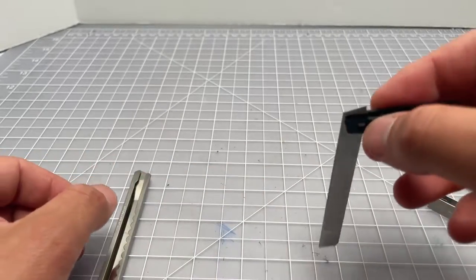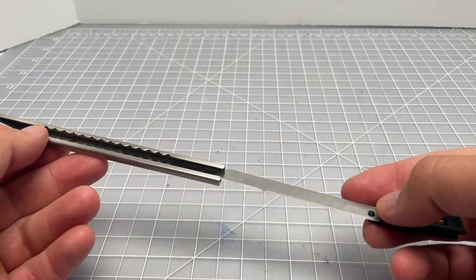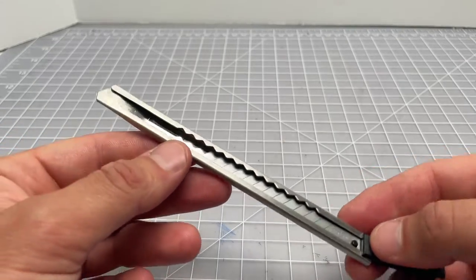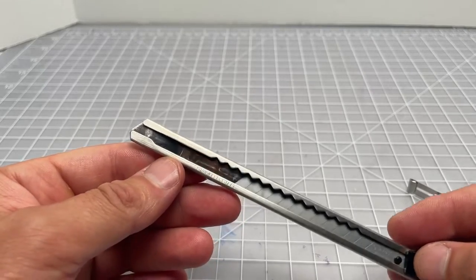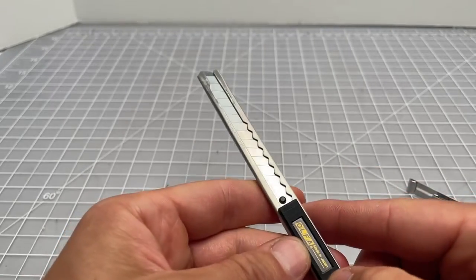You want to be really careful because this thing just wants to swing around. Now you slide this in again, really careful. This angled side always goes up, slide it in. Now you're good.